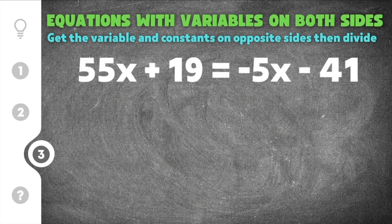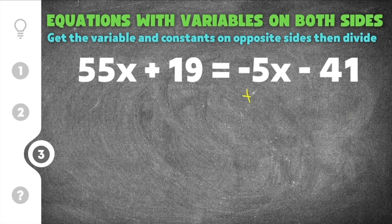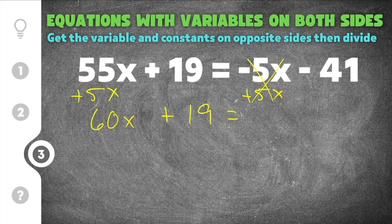Finally, the last practice problem on equations with variables on both sides is going to be 55x plus 19 equals negative 5x minus 41. Our first step is to get the variables together. I have 55x and I have negative 5x on the other side. I could subtract 55x, or I could add 5x — it doesn't matter, you'll get the same answer. In this case, I'm going to add 5x to both sides. These x's will cancel, and then 55x plus 5x is going to be 60x. I'm going to bring down plus 19, the equal sign comes straight down, and minus 41 also comes down.